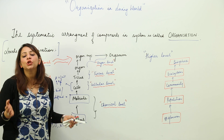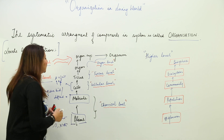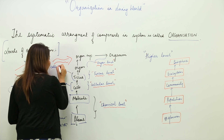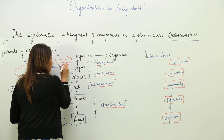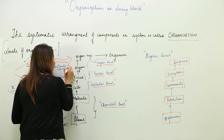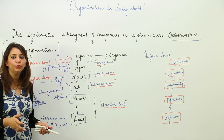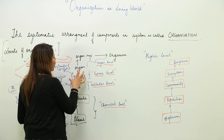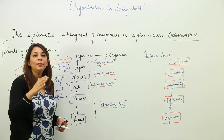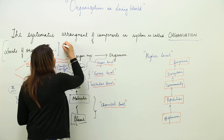Cells which are similar in structure and performing the same function form a tissue. Tissue is a group of cells similar in structure and function — like we have nervous tissue, we have muscle tissue. The tissues that are similar to each other and perform the same function form an organ.